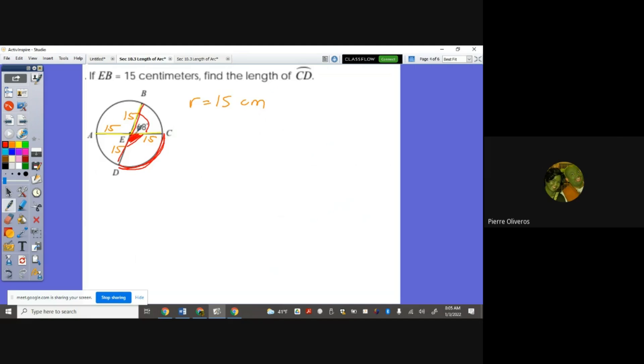This will give me the central angle that I'm looking for. So since that's the diameter, 180 minus 68 will give me 112. So therefore this is 112. My theta here will be 112. So applying the formula, 2πr theta over 360, 2π times 15 times 112 degrees over 360 degrees. So 2 times 15 times 112, the answer is 29.32 centimeters.